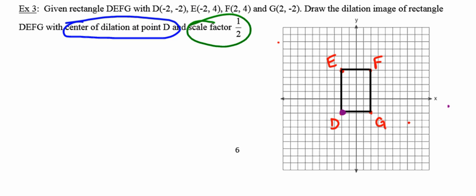The distance now to E' is going to be half of that or 3 units. So there will be E'. Distance from D to G is 4. So the new distance is going to be half of that or 2, making that my G'.